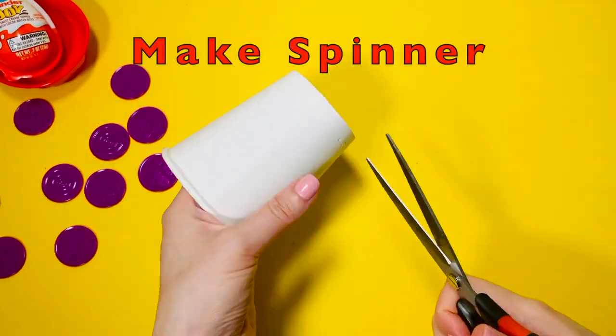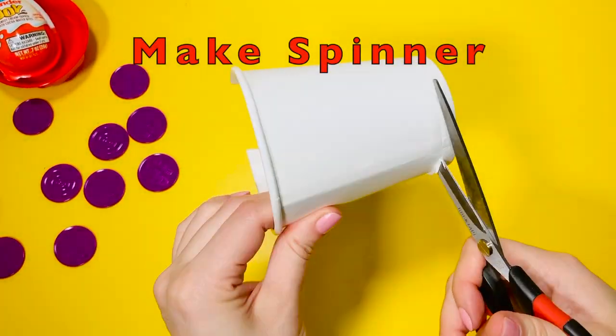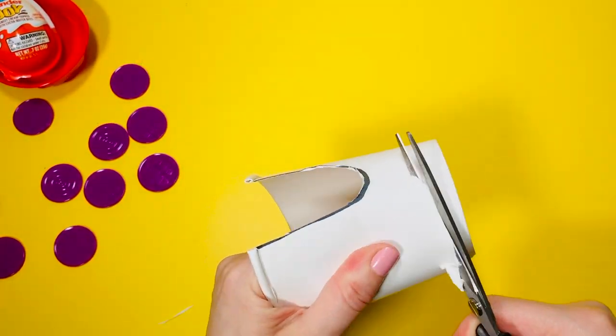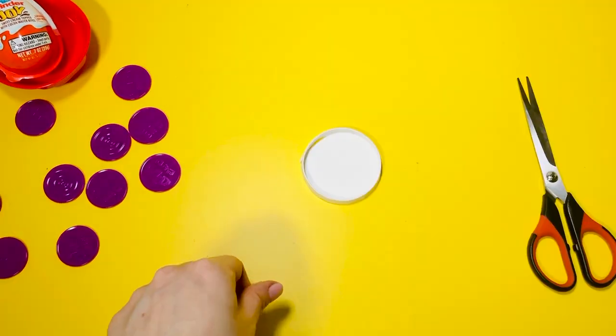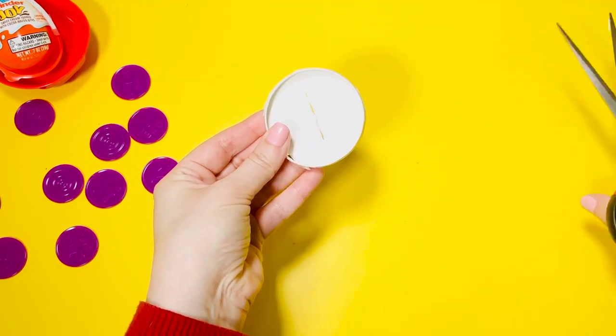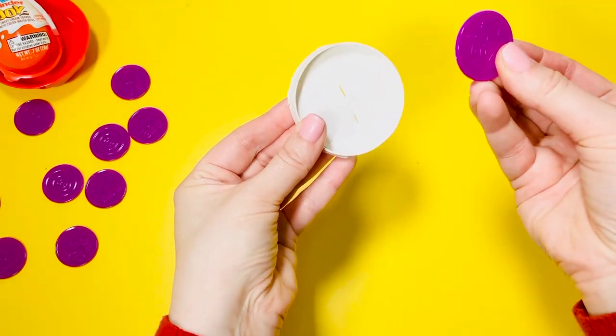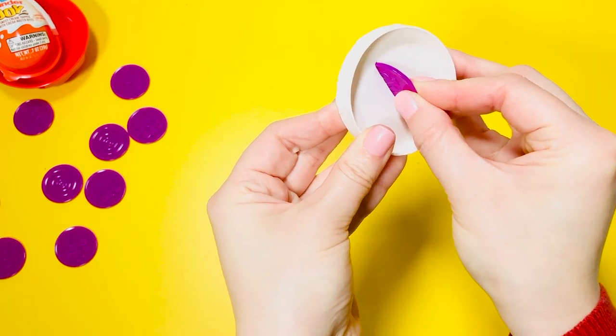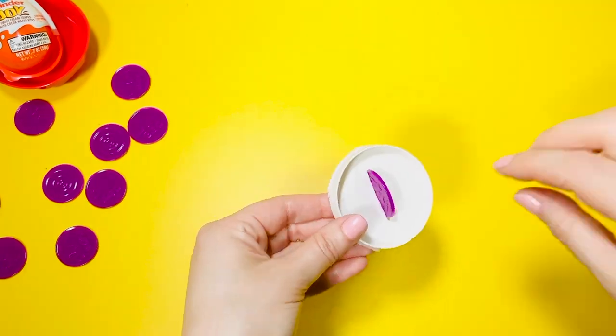Let's make a spinner top now. Cut off the bottom part of the cup. Make a slit in the middle to fit your coin. Insert the coin to check for the size. Use your fingers on the coin and make it spin.